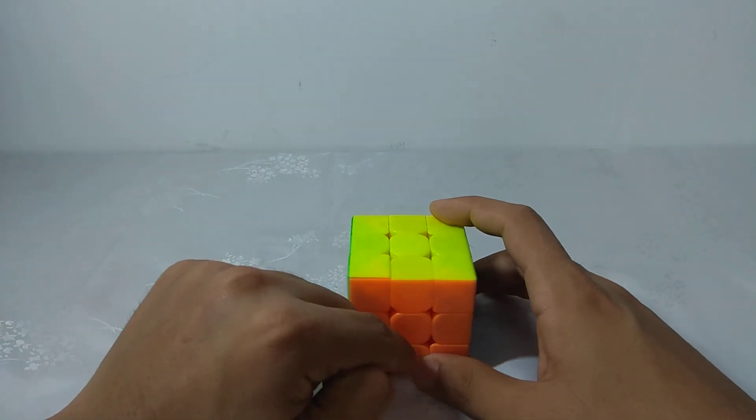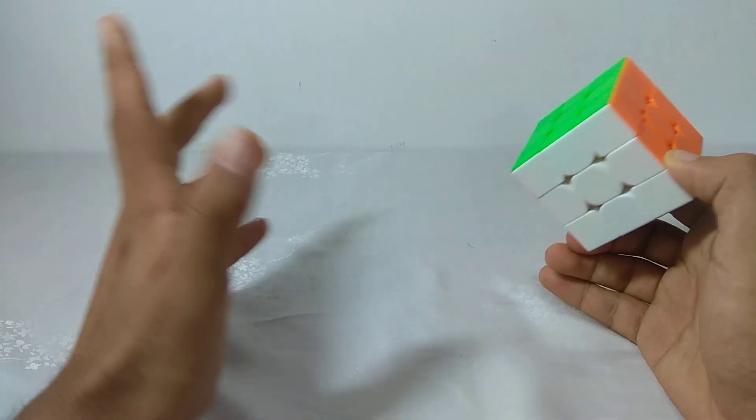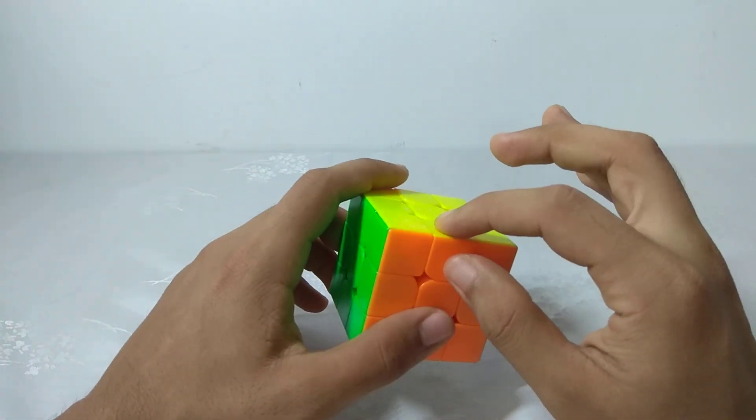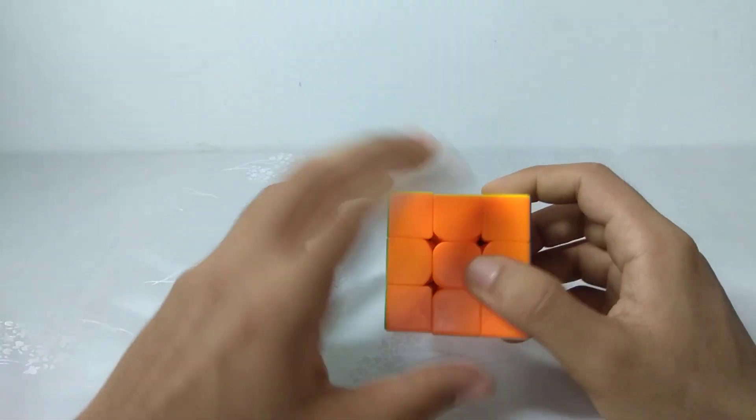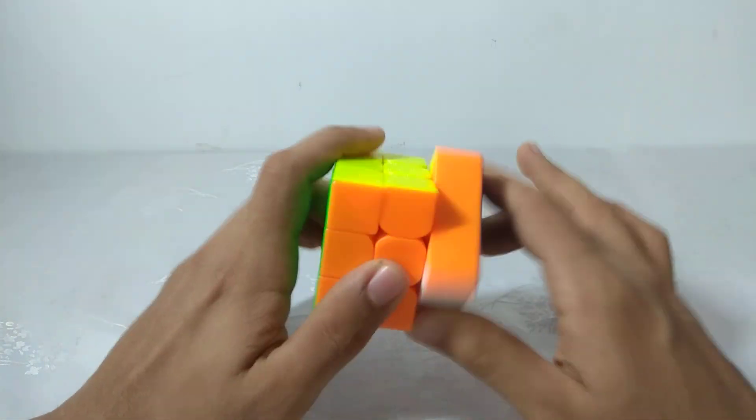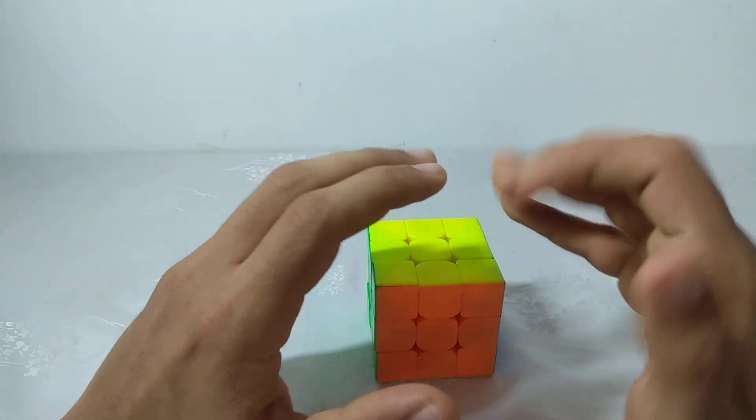If you're using the system where you first memo the edges and then the corners, you can try switching to memo the corners visually, then do the edges and solve them as audio, remembering them as audio and solving them quickly, then solve the corners. This will help drastically increase your think-ahead and reduce your memory time.